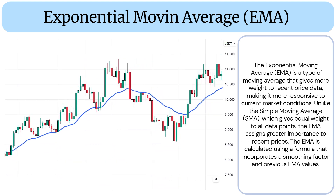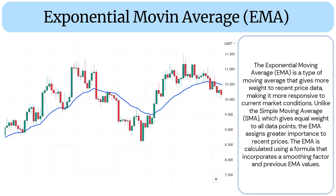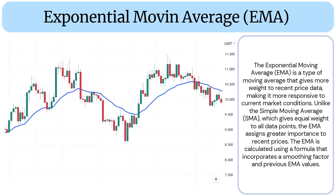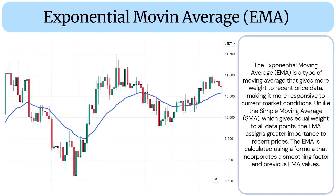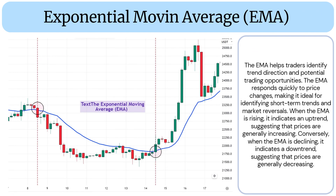The EMA is calculated using a formula that incorporates a smoothing factor in previous EMA values. It helps traders identify trend direction and potential trading opportunities, and responds quickly to price changes, making it ideal for identifying short-term trends and market reversals.